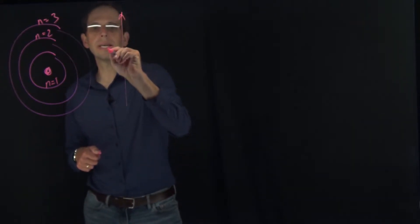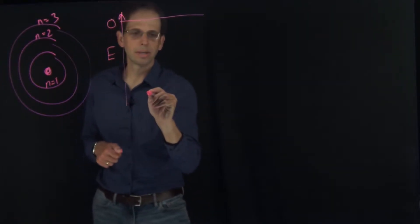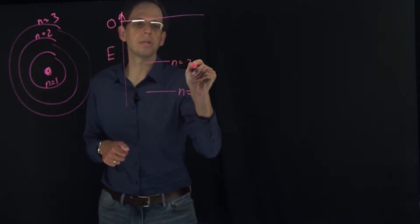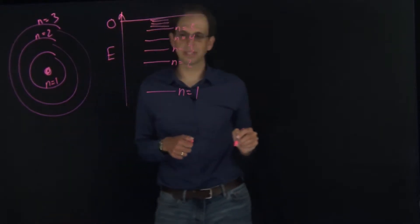There's energies associated with these orbits, so this is zero, the n equals 1 is the most stable, and we have n equals 2, n equals 3, n equals 4, n equals 5, and lots more levels in there.